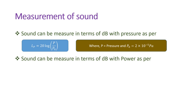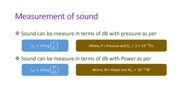Sound can also be measured in dB with respect to power. The formula is: sound in dB = 10 log(W / W0), where W is the given power in watts, and W0 is the reference power, which is 10⁻¹² watts.